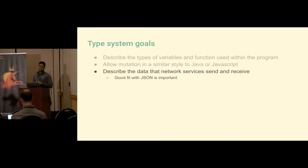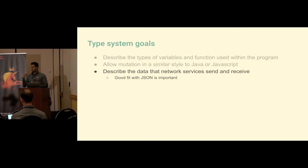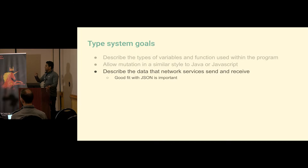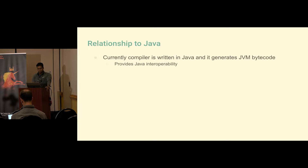The types are designed so that you can easily describe messages flowing through the network — JSON, XML, or in gRPC you have protobuf binary serialization. The type system is designed so you can easily describe the structure of those network payloads.